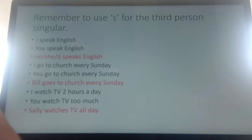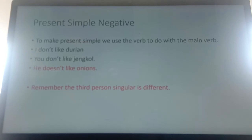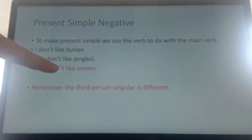Now, when we're using the present simple negative, we use the verb 'to do' with the main verb. So: I don't like Julian. You don't like Jen Cole. He doesn't like onions. It's the same for I and you, and for the plural — they and we don't. But for the third person singular, he or she doesn't like. Remember, the third person singular is different.